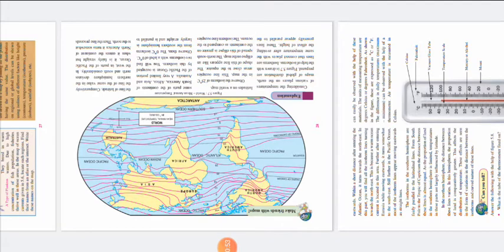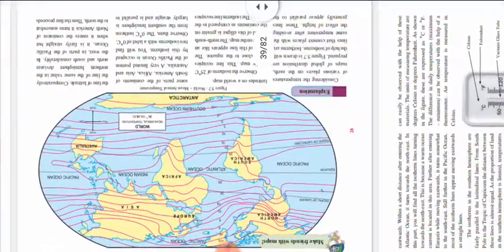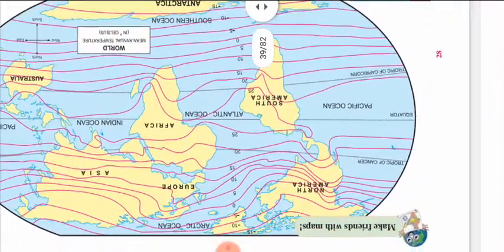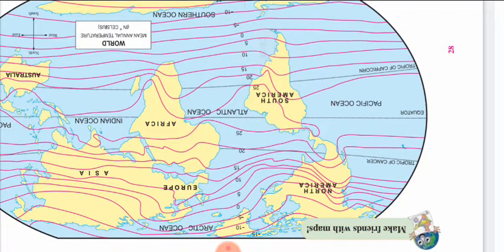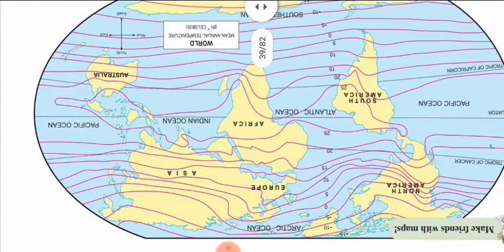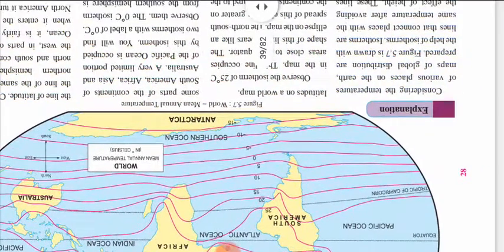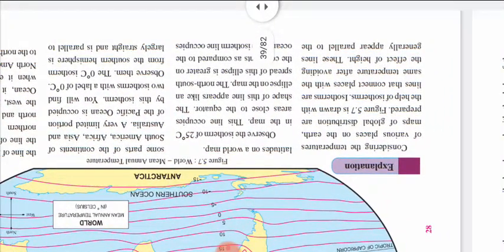Just see this map. It is about the world mean annual temperature map. The continents are shown. See the isotherms — those are the red lines. See the 0 degree Celsius, 20 degree, 25, 15, 10 — and you see north, south, east, west directions are also shown to you. So we will start with the explanation.